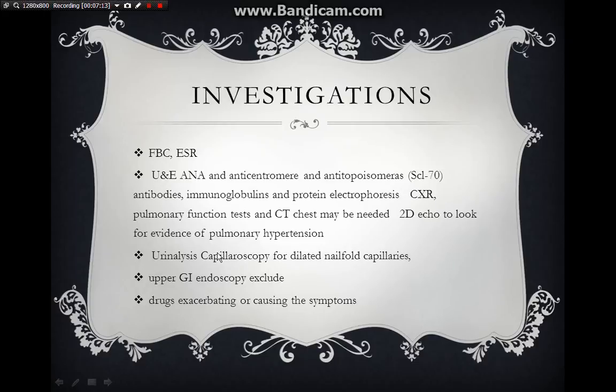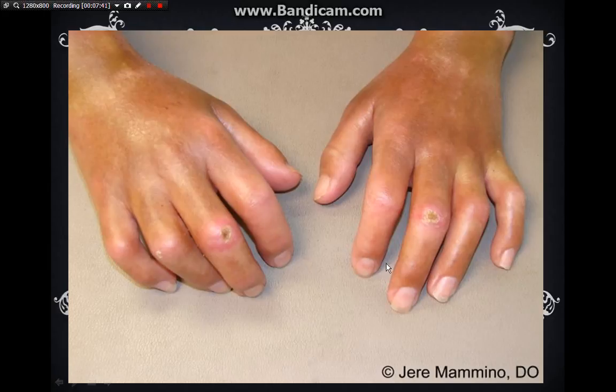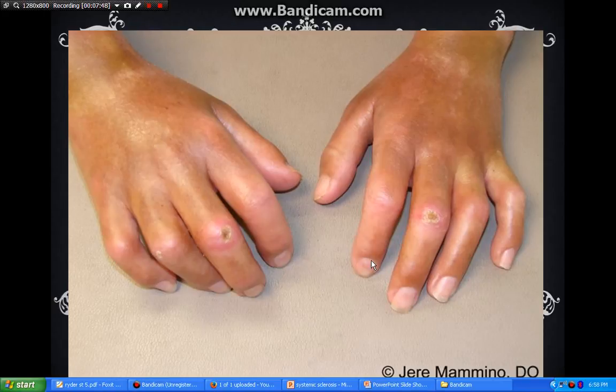Looking at the clinical pictures: this lady has fixed flexion deformity and is unable to extend her fingers. There are ulcers visible, and calcinosis — calcium deposition — is also present. This is what we call sclerodactyly. Looking at the face in the next picture, there are many reddish spots — this is telangiectasia. We should also look inside the buccal mucosa and at the nose. You can see a waxy appearance over the face.